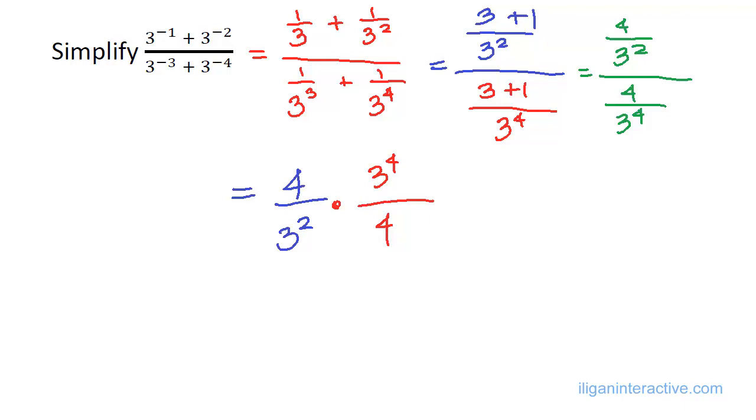And then, the 4 and the 4 cancels out, and we are left with 3 to the 4th over 3 squared.